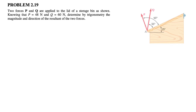Hi everyone, welcome back to the channel. We're going to be solving question 19 from the second chapter of the Peter Johnson textbook. We have two forces P and Q that are applied to the lead of a storage bin. We know that force P is 48 newtons and Q is 60 newtons.